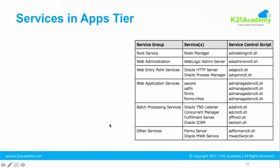The table on the right-hand side of the screen shows the service groups. These are the main service groups in Oracle eBusiness Suite on the application tier. Each service group will have one or more services, and these services are controlled by a service control script. In R12.2 you have a root service, and that root service is managed using a node manager — the root service group consists of a service called node manager. What exactly is node manager and where it is used, we'll see in a subsequent lesson.